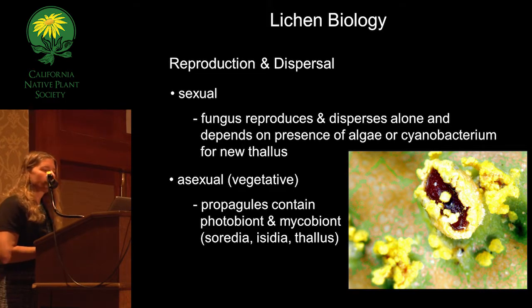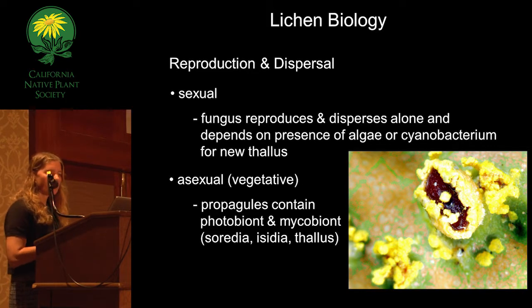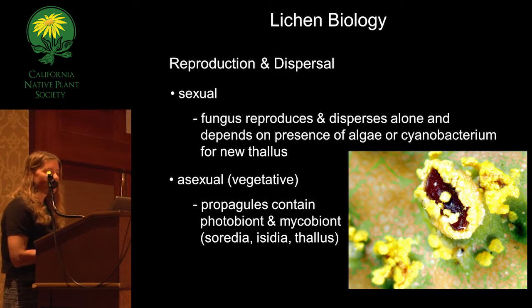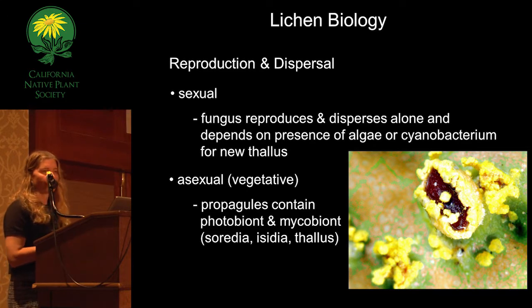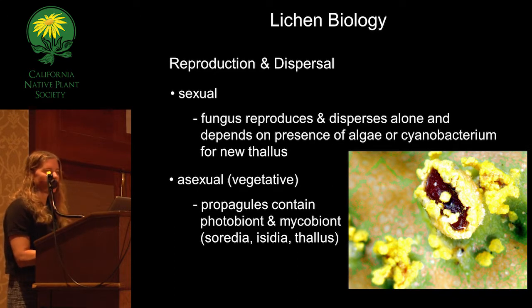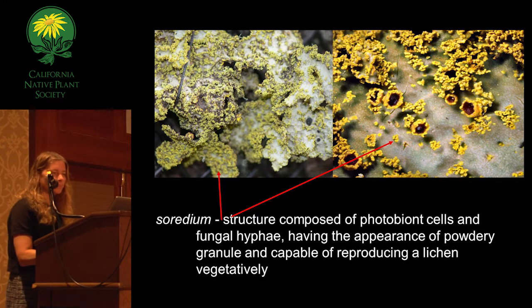Reproduction is both sexual and asexual. For sexual reproduction, it is the fungus that disperses and then relies on the presence of an alga or cyanobacteria to actually form a lichen. Asexual reproduction involves propagules that contain both a photobiont and a mycobiont, and these occur in the soredia as well as the isidia and the thallus.